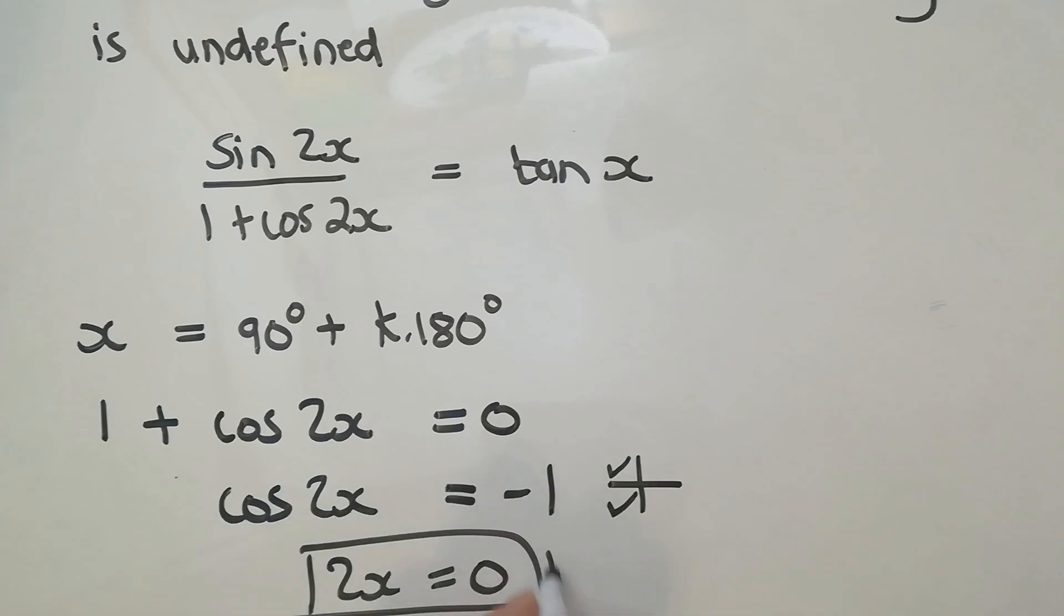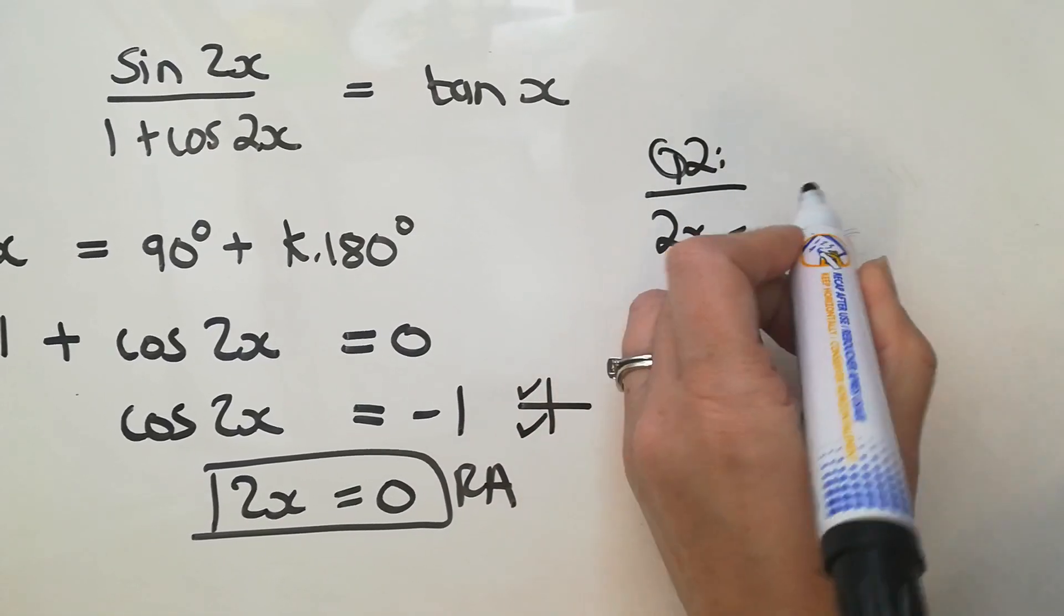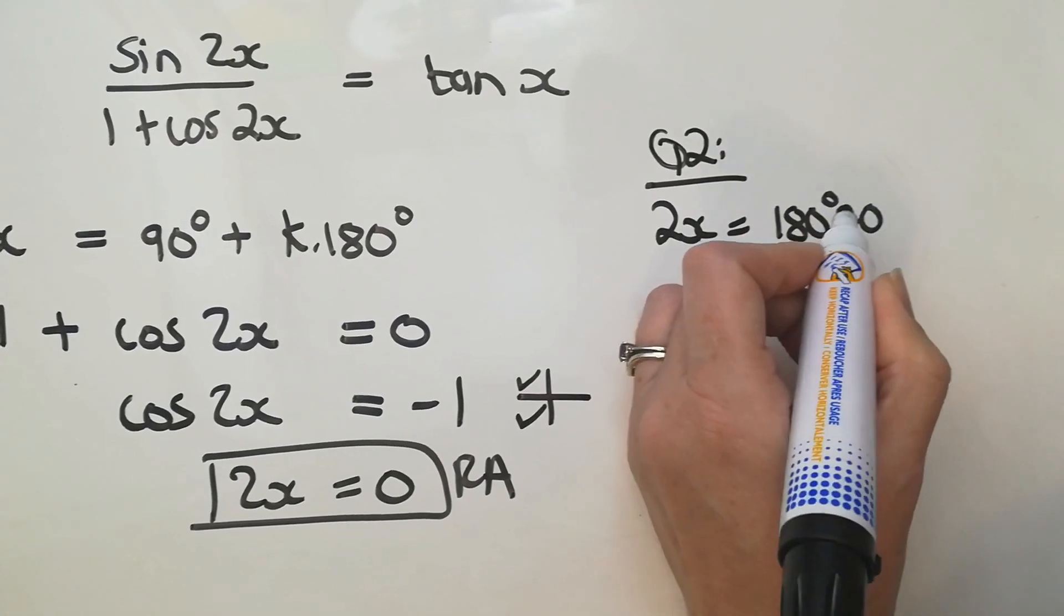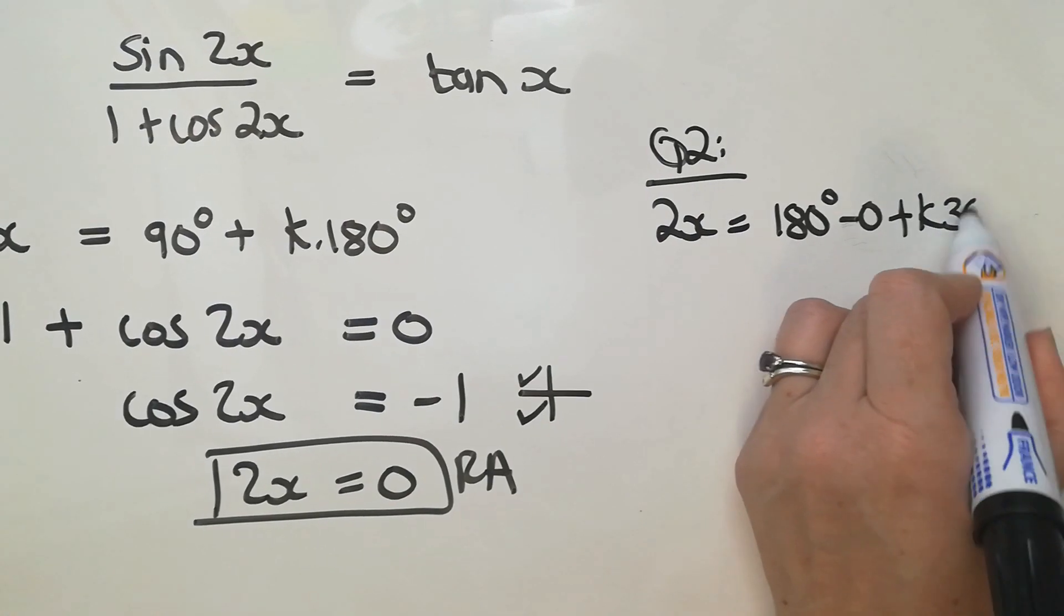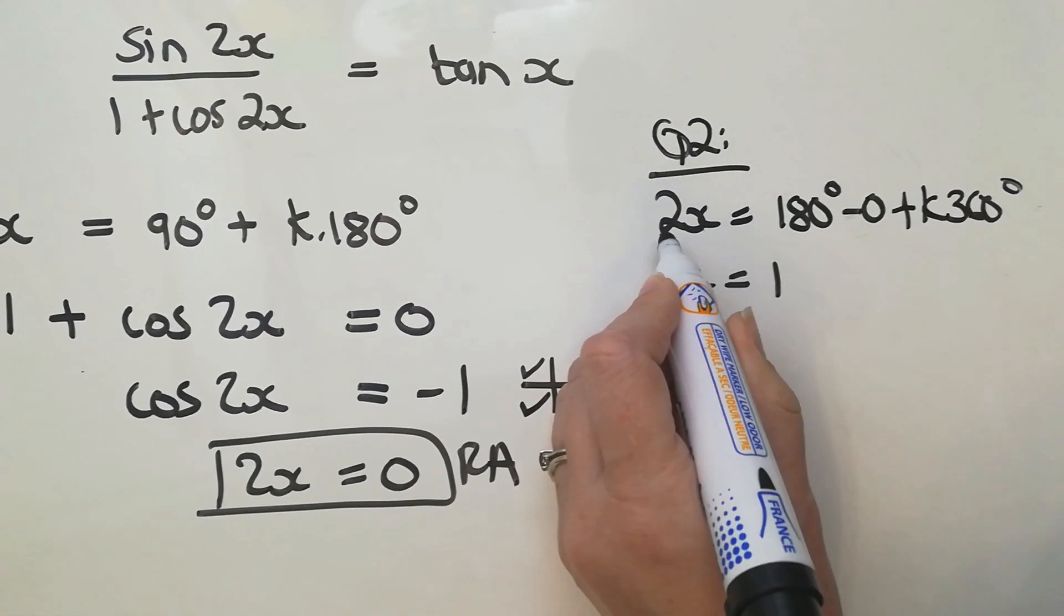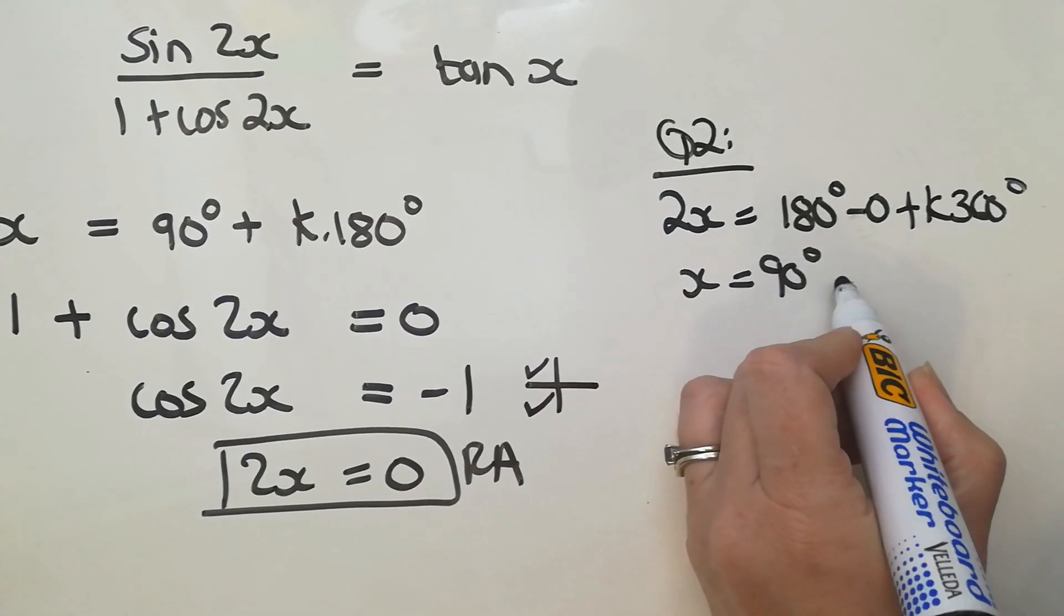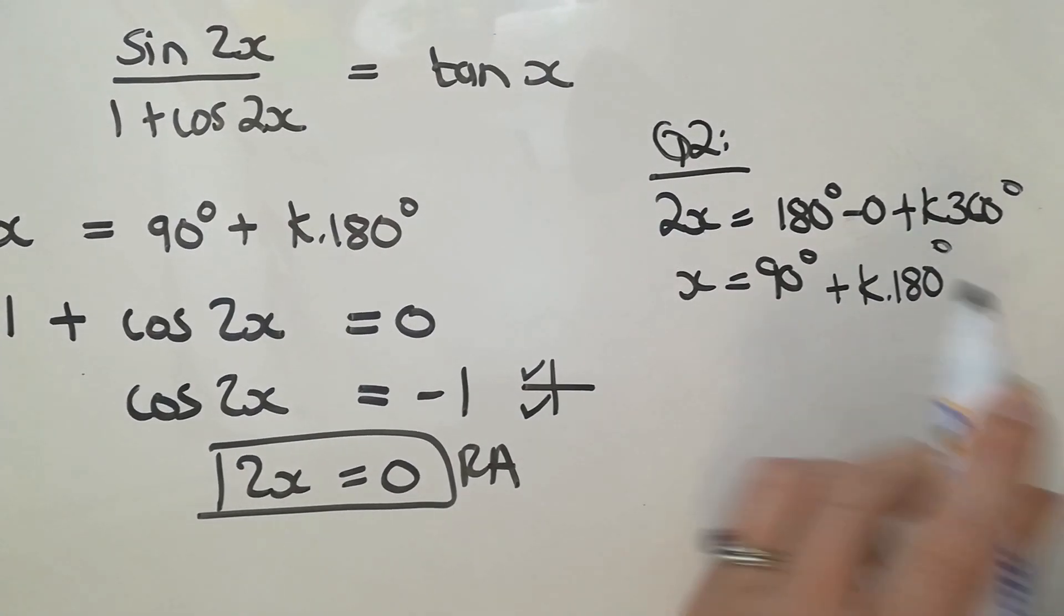At this point, it's the reference angle. And then from there, I go into quad 2 and quad 3. In quad 2, I'm going to say 2x equals 180 degrees minus 0 plus k360. And then I'm just going to have x is 90 plus k180, dividing everything through by 2.